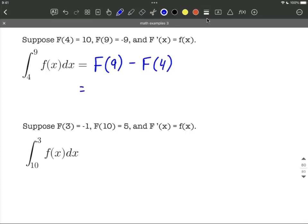So basically big F of 9 can be replaced with negative 9 from the right-hand side here, minus big F of 4 is equal to 10, so negative 9 minus 10. Combine these together, we get negative 19 for our overall answer.